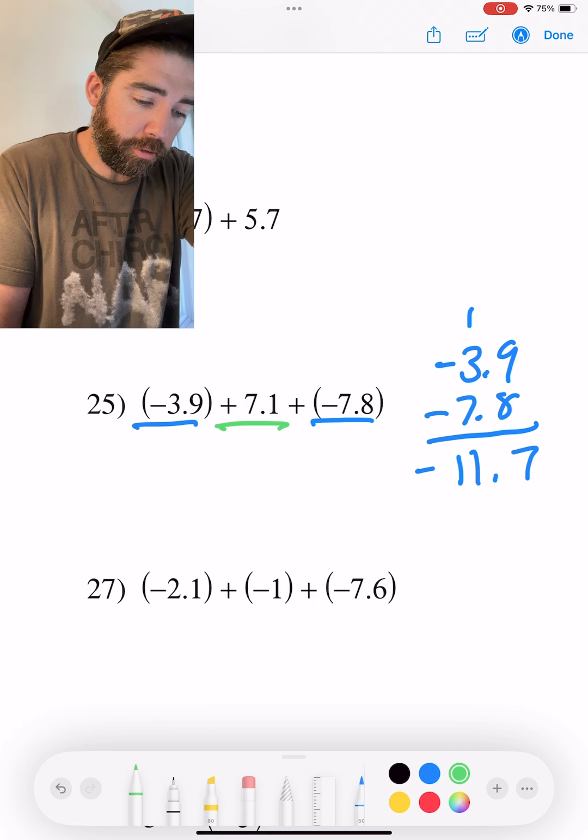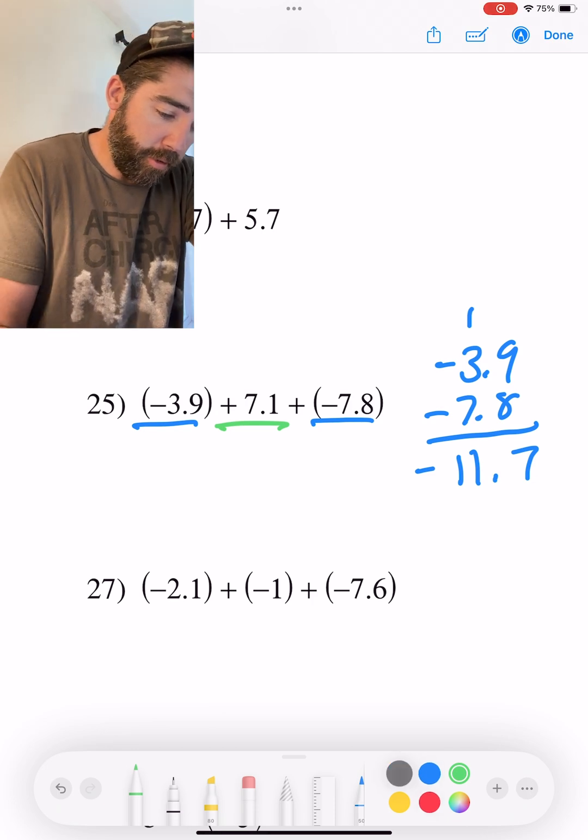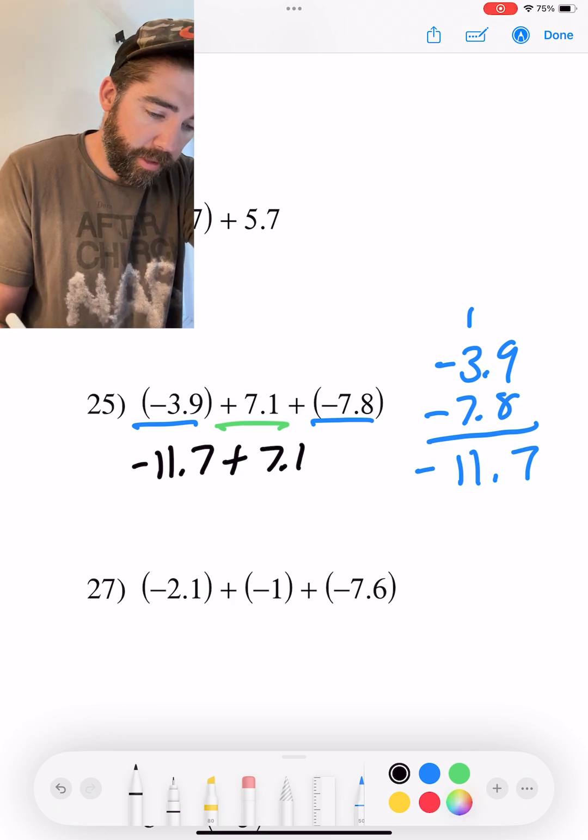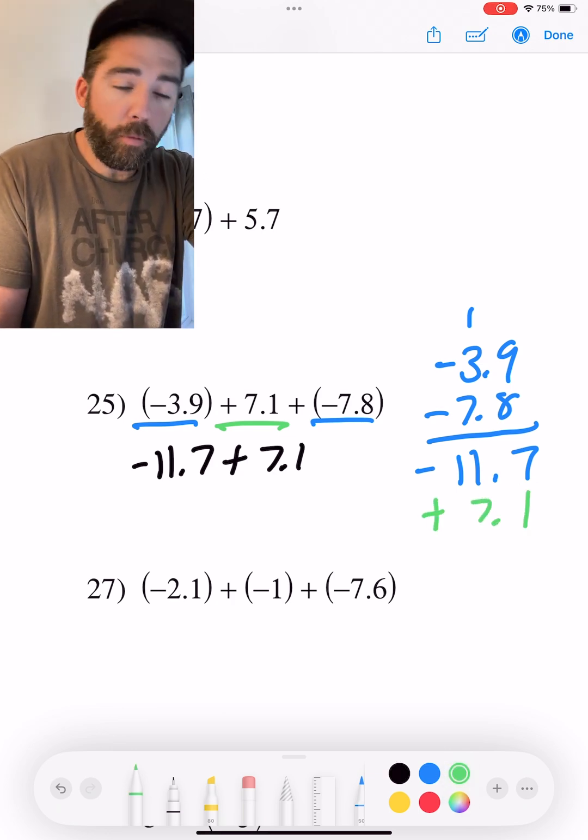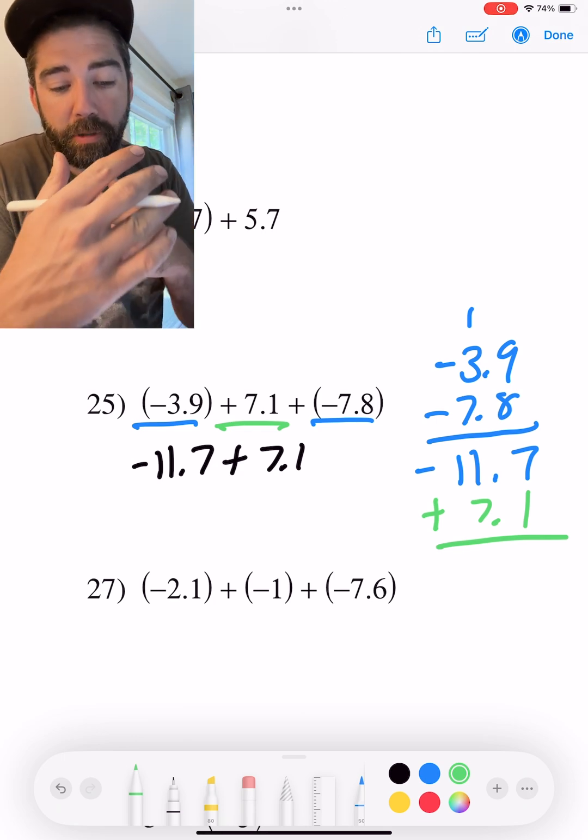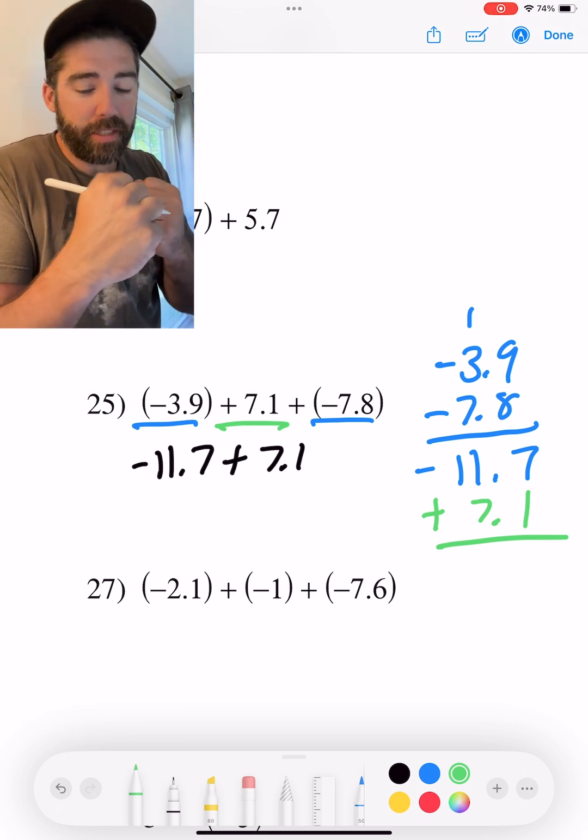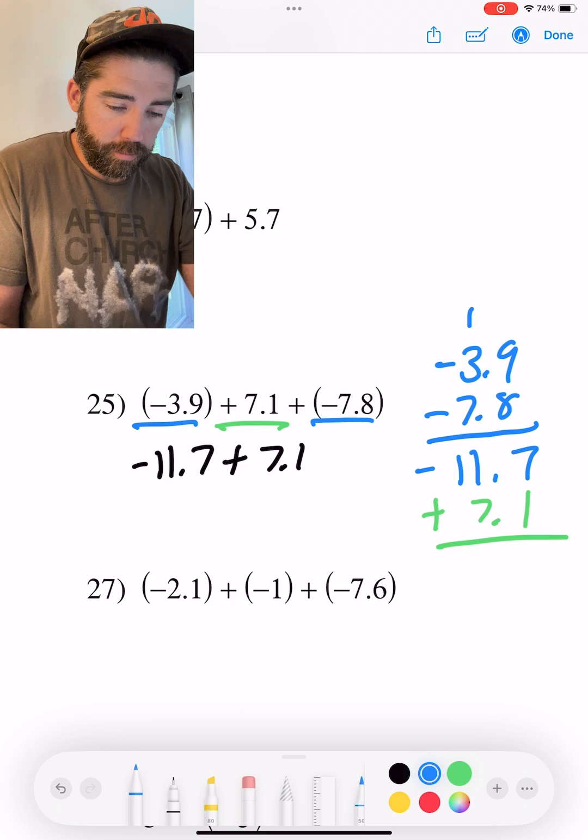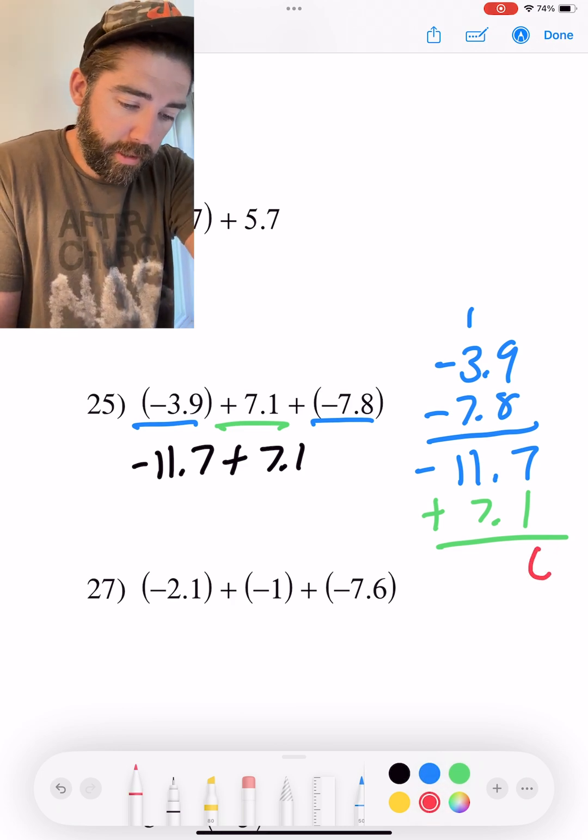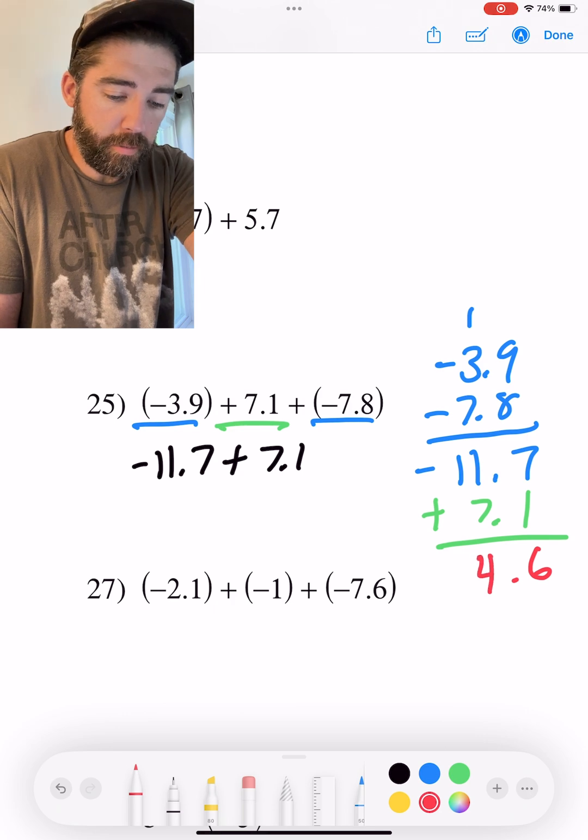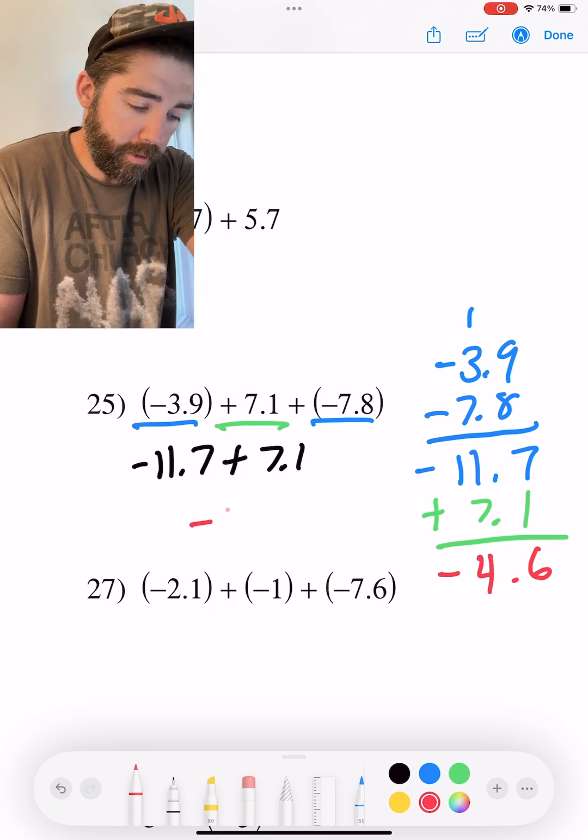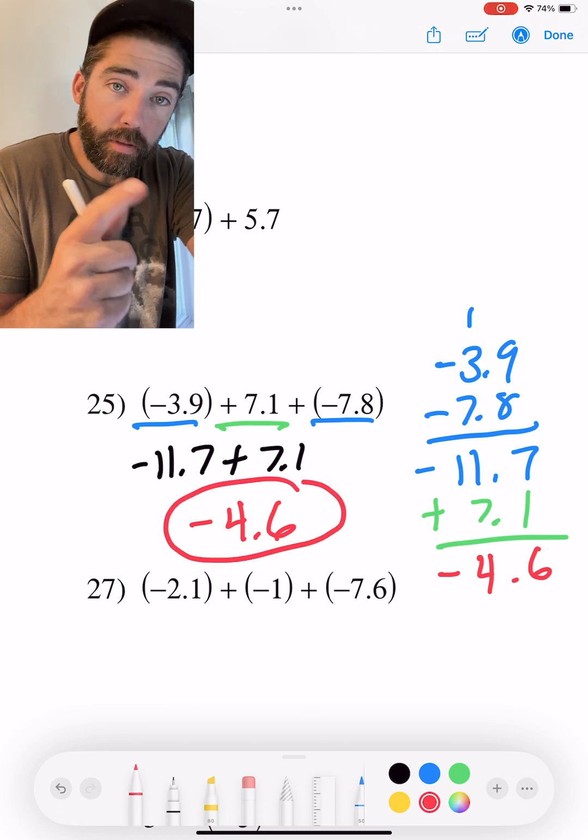And then we're going to bring in our green one. So with our new negative 11.7 plus 7.1, what is this? Negative 11.7 plus 7.1. What we do when the signs are different is we subtract, keep the sign of the larger. So here we go. Let's subtract. 7 minus 1 is 6. 11 minus 7 is 4. Keep the negative. So final answer, negative 4.6. There you go.